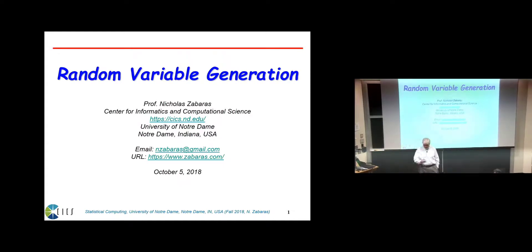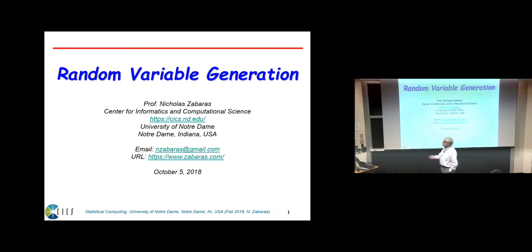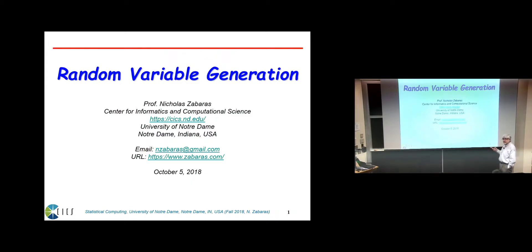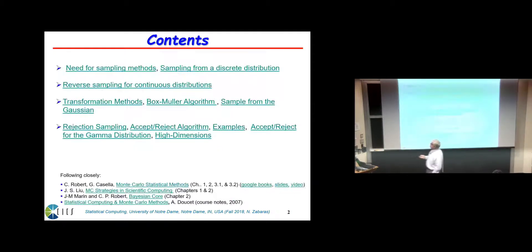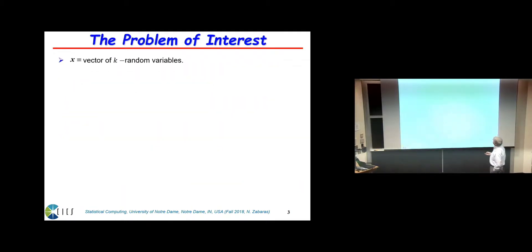We continue on the cloud of methods. I want to say a little bit about random variable generation. In some sense that's a subject you don't really have to worry too much about because if you use existing statistical libraries everything has already been programmed. But if you try to do this with Python or something like that, you may have to program these things yourself.